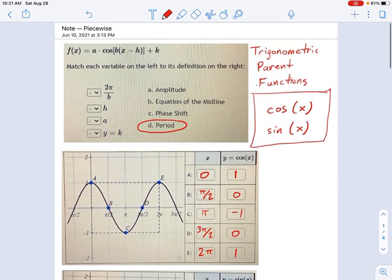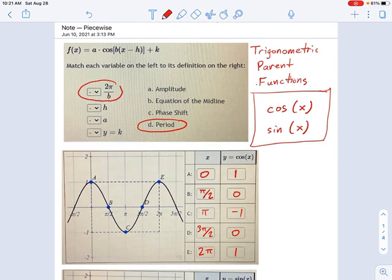Now, the period is calculated as 2 pi divided by B, where B is that scaling factor, the horizontal scaling factor right here. So that's the only one of these where you actually have to do a little bit of math.